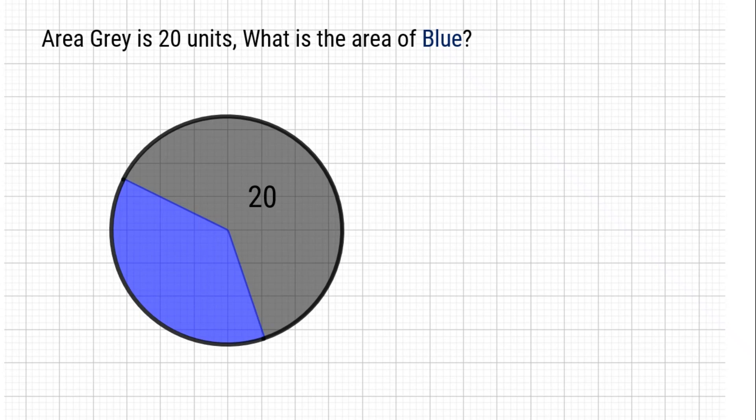In a circle diagram, area gray is 20 units. Can you calculate what's the area of blue?